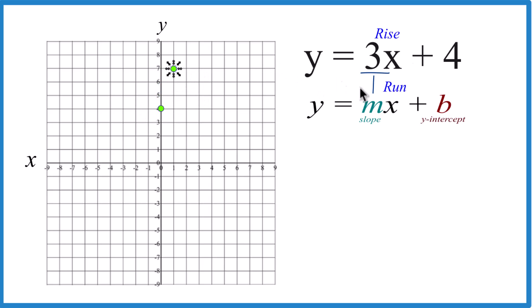And now we can do it again. We could go rise 1, 2, 3, and over 1, but we're off the graph. So let's go in the opposite direction. Let's go down 1, 2, 3, and to the left 1.